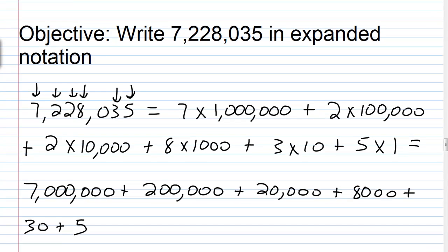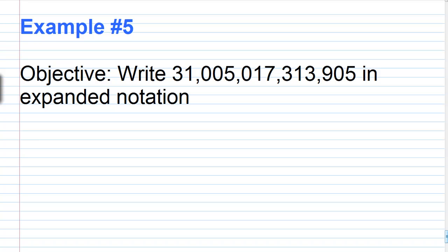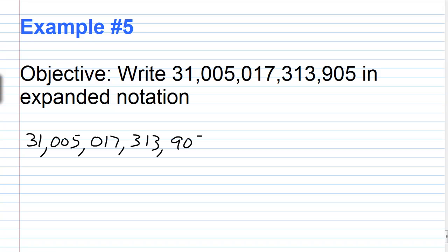Let's take a look at one more example. For example number 5, our objective is to write 31,005,017,313,905 in expanded notation. This is a really big number so it might take a little while, so just be patient. We have our number 31,005,017,313,905, and you're just going to start at the leftmost digit and work your way to the right.